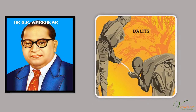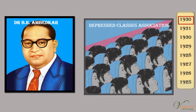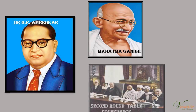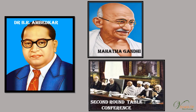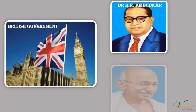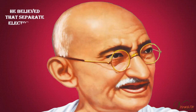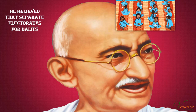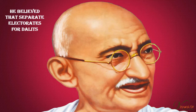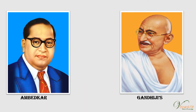Dr. B. R. Ambedkar, who organised the Dalits into the Depressed Classes Association in 1930, clashed with Mahatma Gandhi at the second roundtable conference by demanding separate electorates for Dalits. When the British government conceded Ambedkar's demand, Gandhiji began a fast unto death, believing separate electorates would slow down the process of their integration into society. Ambedkar ultimately accepted Gandhiji's position, and the result was the Poona Pact of September 1932.